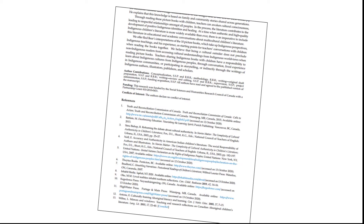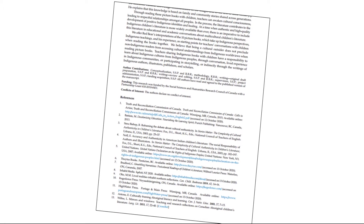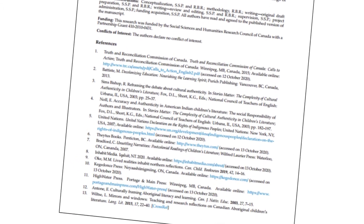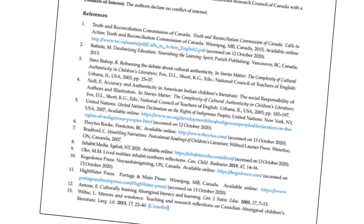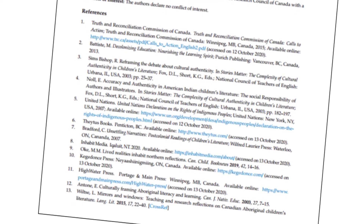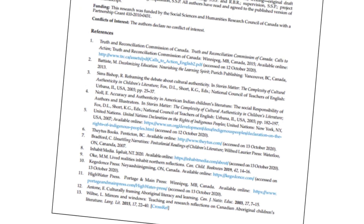When a researcher publishes a scholarly article or book, they are drawing on the work of others. So social scientists, historians, or biologists — researchers are influenced by the articles, books, and essays others have published.